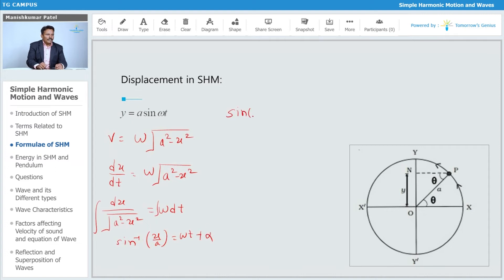So sine of omega t plus alpha is equals to x upon a. So x is equals to a sine of omega t plus alpha. This is the expression for your displacement.